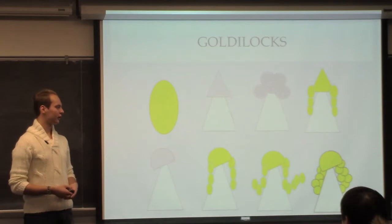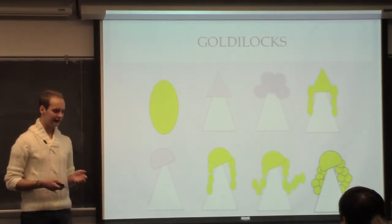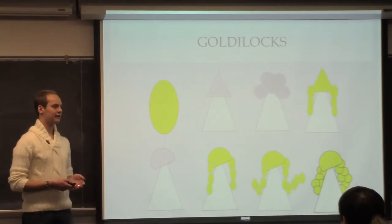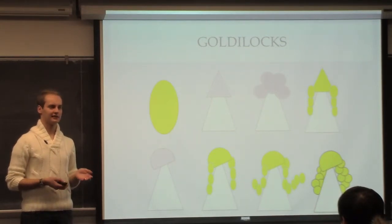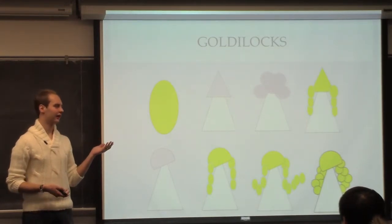I first started with Goldilocks, and I had an oval as the original shape, but I decided that I didn't like that, because in the story she's described as this evil girl who intrudes on the bears, so I thought that that was just too happy of a shape, and the color didn't help at all either.